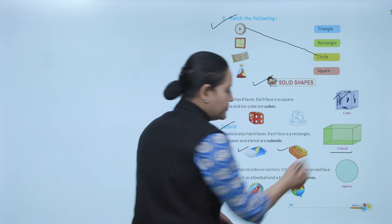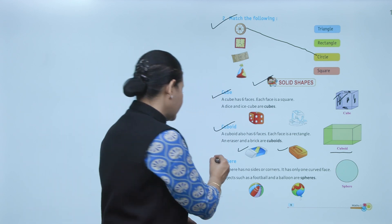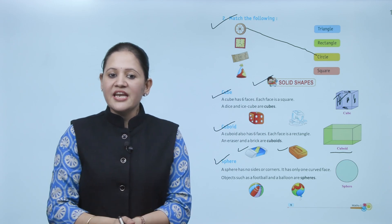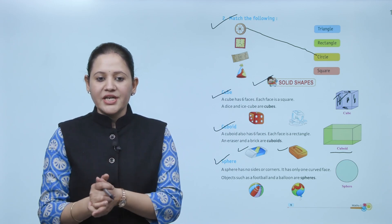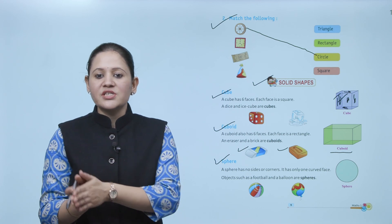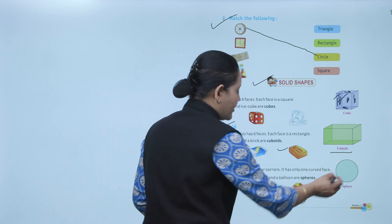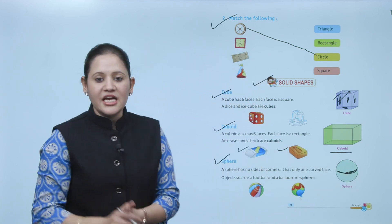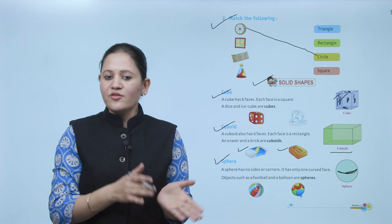Next is sphere. A sphere has no sides and no corners — it has only one curved face. Objects such as a football and balloons are spheres. A sphere has only one curved surface and no sides, no corners — like a football or a ball.